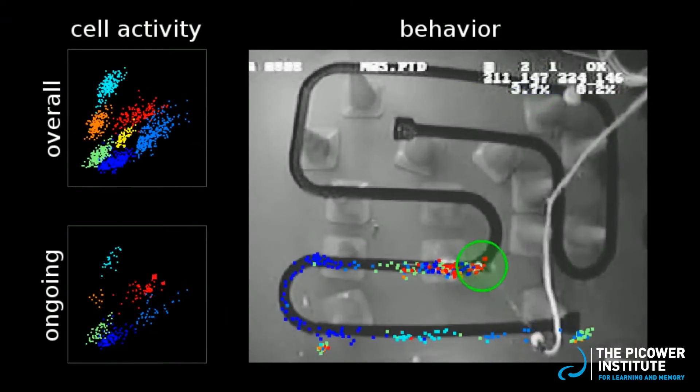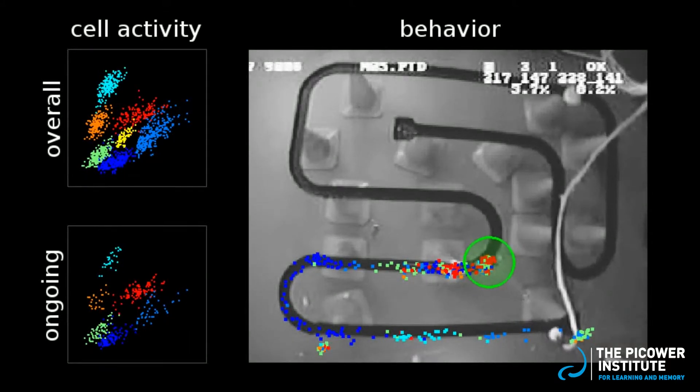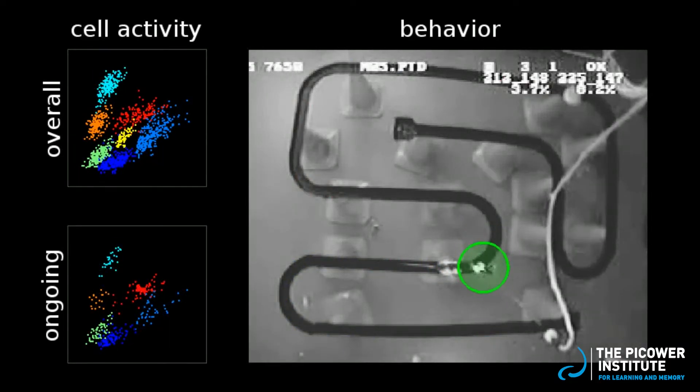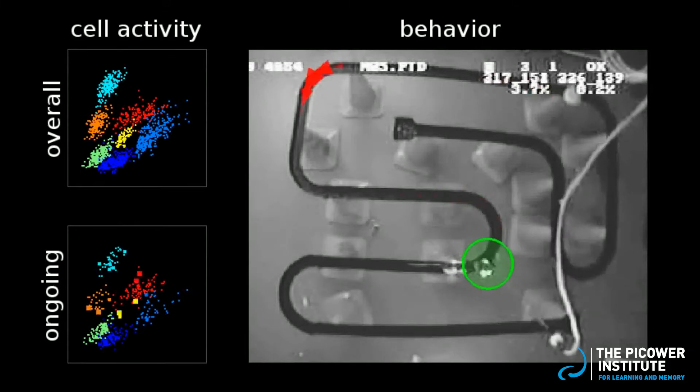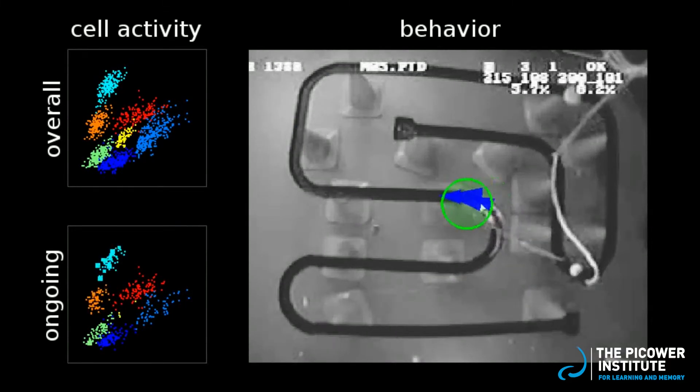When the rat stops on the track, you begin to see bursts of the place cell activity, including different colored place cells that don't represent the current location. But if you look at the predicted location of that activity, you find that the hippocampus is replaying place cell sequences from other parts of the track, as if the rat is thinking about those locations.